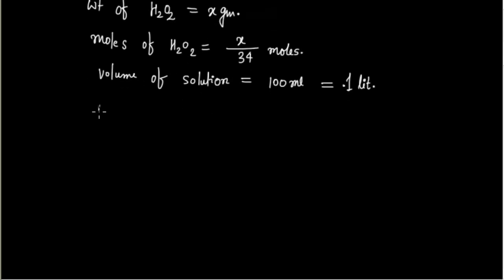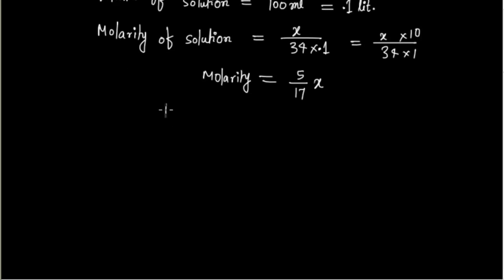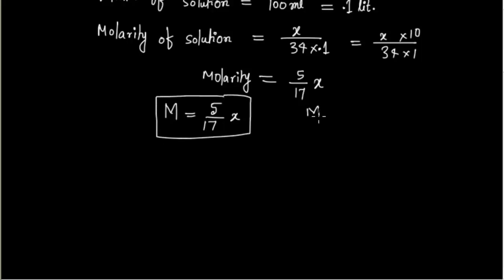Molarity of solution equals moles divided by volume. Moles is x/34 and volume is 0.1 liter, which is 1/10. So molarity = (x/34) ÷ 0.1 = 5x/17. So molarity M = (5/17) × x, where M is the molarity and x is the percentage strength of H2O2 solution.